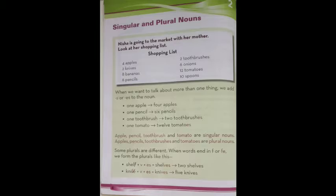Some plurals are different. When words end in F or FE, we form the plural by changing F to V and adding ES. Like shelf becomes shelves, knife becomes knives. Here two shelves, here five knives.